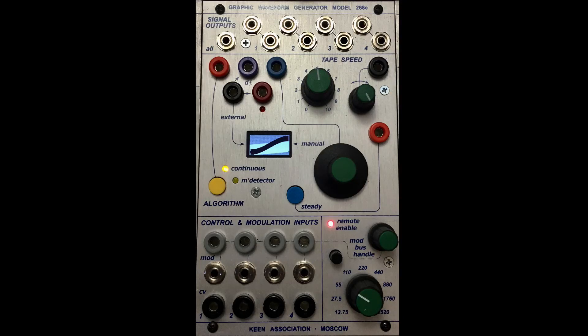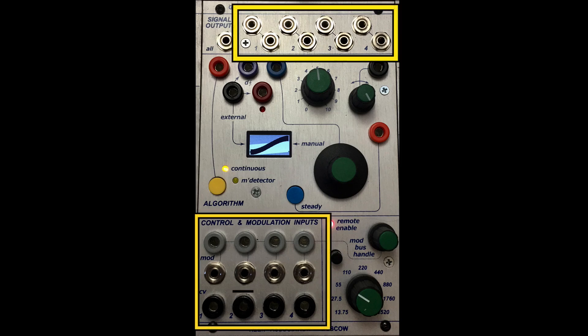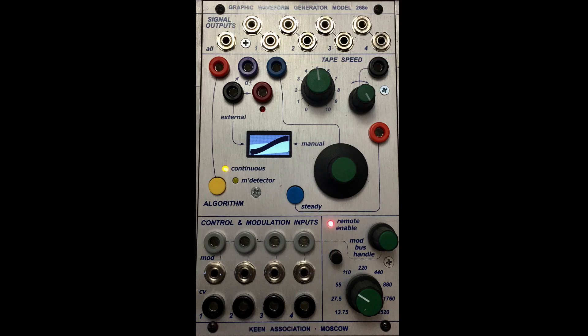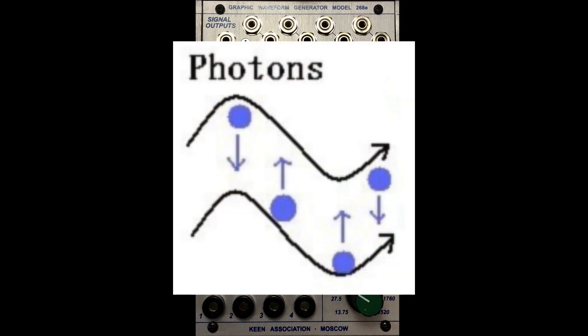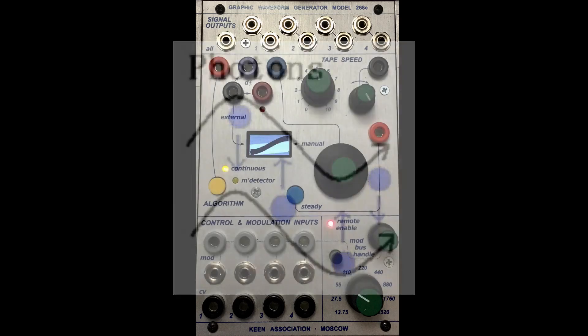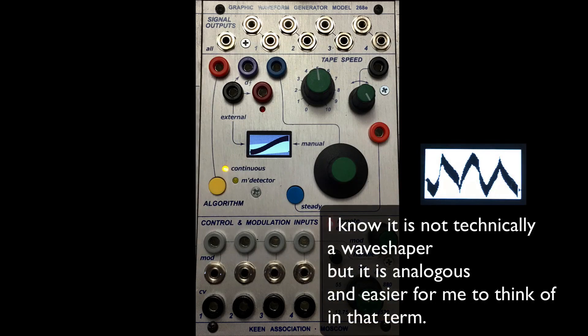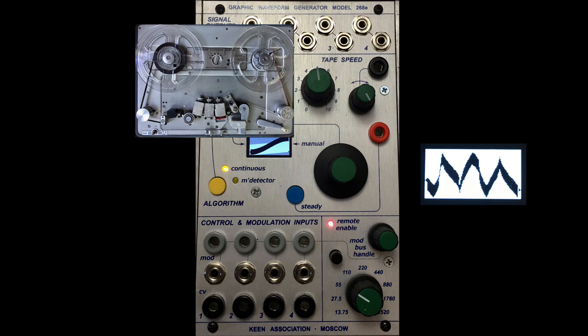Welcome to the Keen Association Buchla Format 268E Graphical Waveform Generator. This is four oscillators in one panel. I'm just going to be looking at one oscillator for the bulk of this tutorial, and I'll bring in a second oscillator right at the end. I think of its format the way I think of a photon, which is both a wave and a particle at the same time — this is a wave shaper and a tape player at the same time.